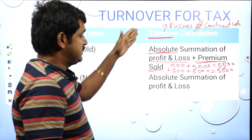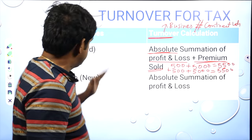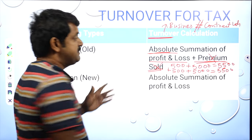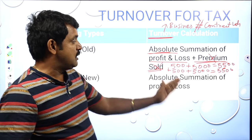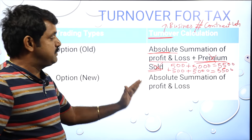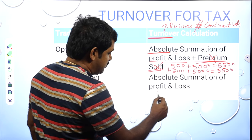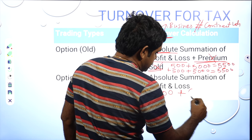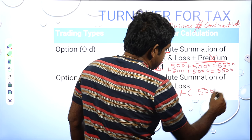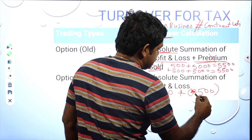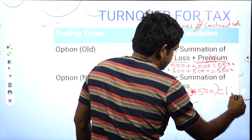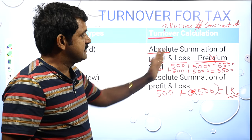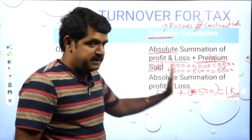The new rule says you do not need to include the premium sold — it is not taken into account to calculate your turnover. Simply take profit and loss in absolute terms. For example, 500 rupees profit and 500 rupees loss — remove the minus sign — so your turnover is just 1000 rupees. Do not consider the premium sold; just do the summation of profit and loss in absolute manner.